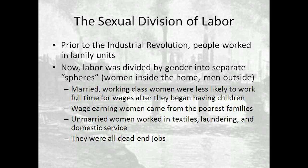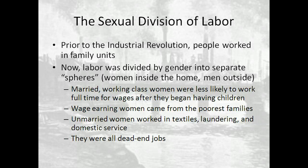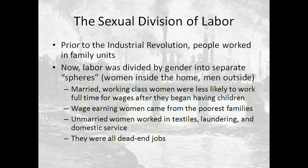Regarding the sexual division of labor, women suffered here as well. Women did work in factories, primarily in laundering. Married working-class women were less likely to work full-time for wages after they began having children. Wage-earning women usually came from the very poorest families. Unmarried women worked in textiles, laundering, and domestic service, but there was virtually no upward mobility for women. Today you talk about a glass ceiling, but this was like a glass floorboard — women could hardly get above the surface, and were very much restricted and confined to the home socially during the 19th century.